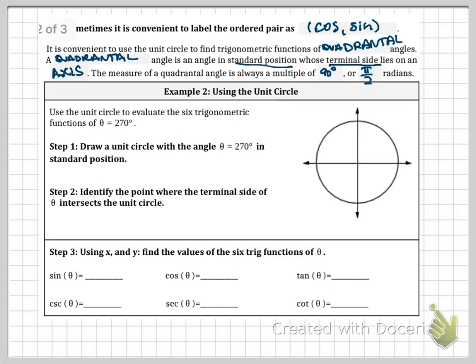So let's look at this example here. You're going to use a unit circle to evaluate the six trigonometric functions of theta equals 270 degrees. Draw a unit circle with the angle theta equals 270 in standard position. Then identify the point where the terminal side of theta intersects the circle. So we know that it starts here, 270. So remember, this is 90, this is 180, therefore this is 270 degrees, and remember this is 360.